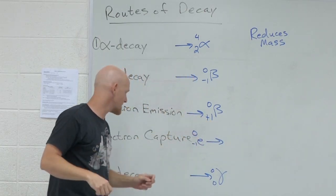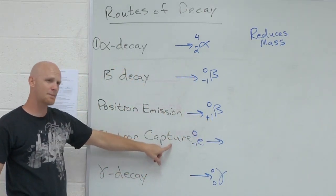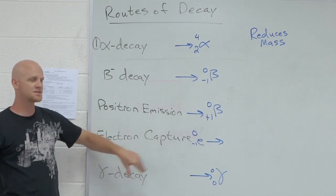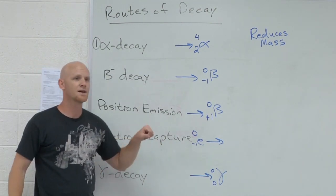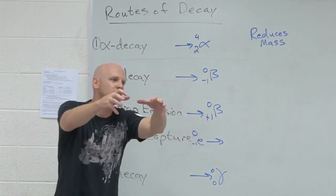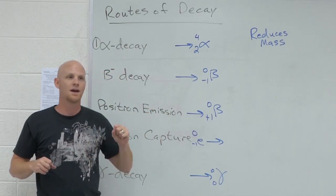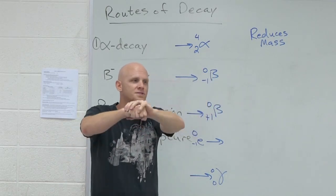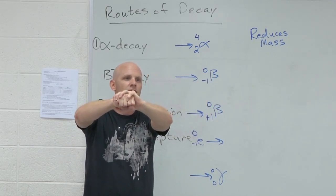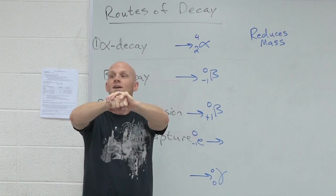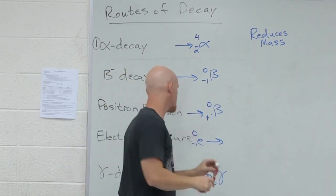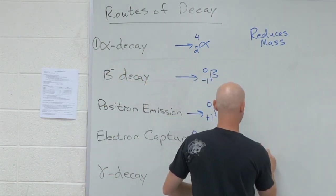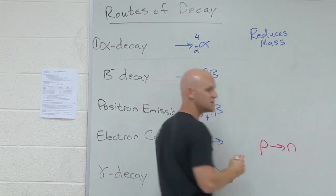Let's look at electron capture first. I know you guys didn't know that one, but just to demonstrate a point here. Electron capture is when one of the inner core electrons is sucked into the nucleus. And when it's sucked into the nucleus, that inner core electron combines with one of the protons in the nucleus. Turning it into what? A neutron. The net result here is that this converts a proton into a neutron.